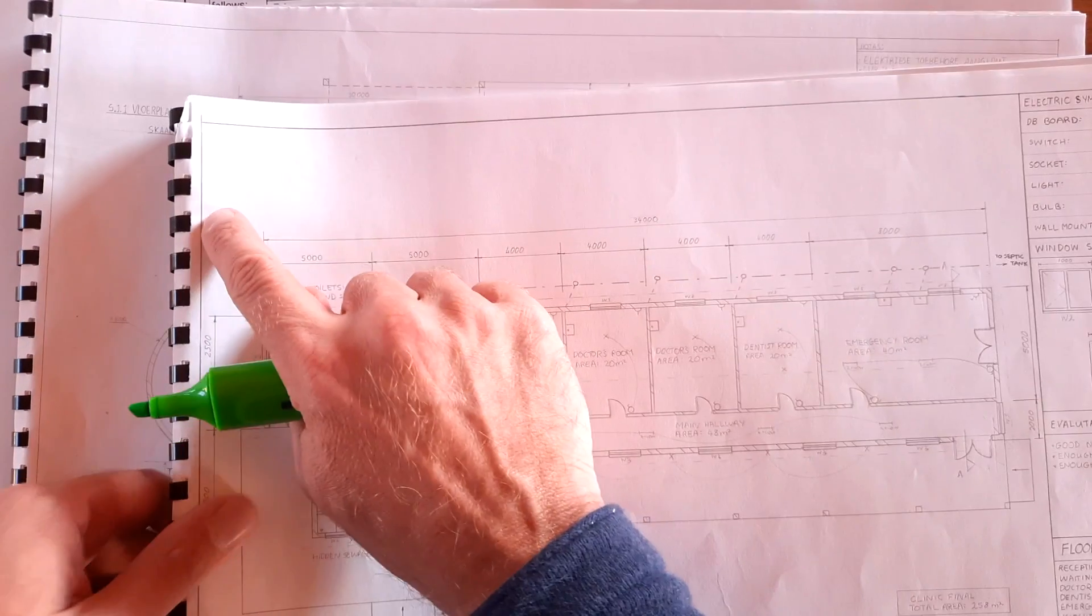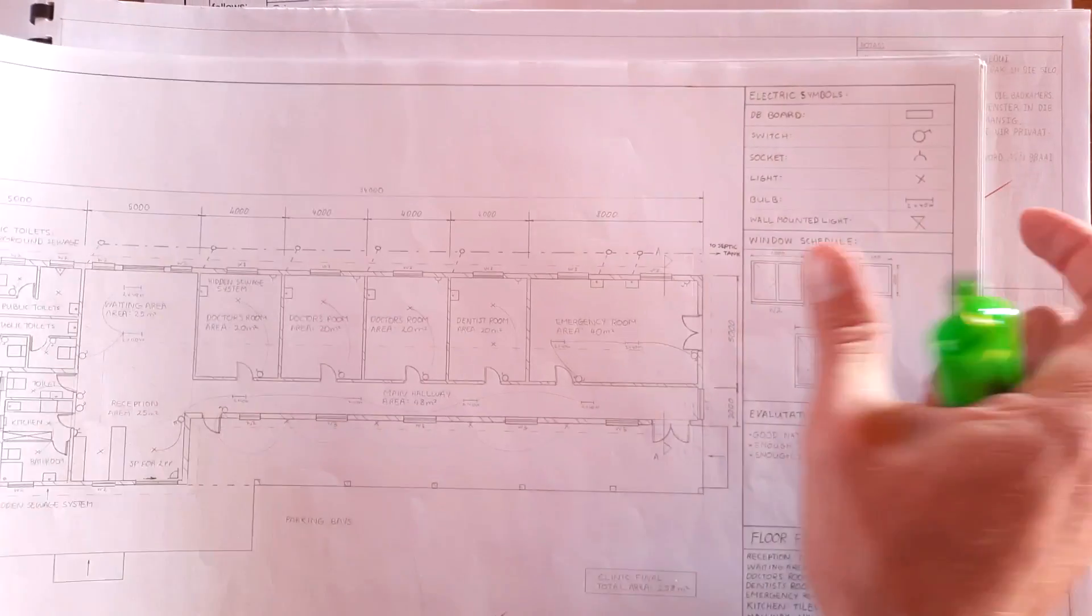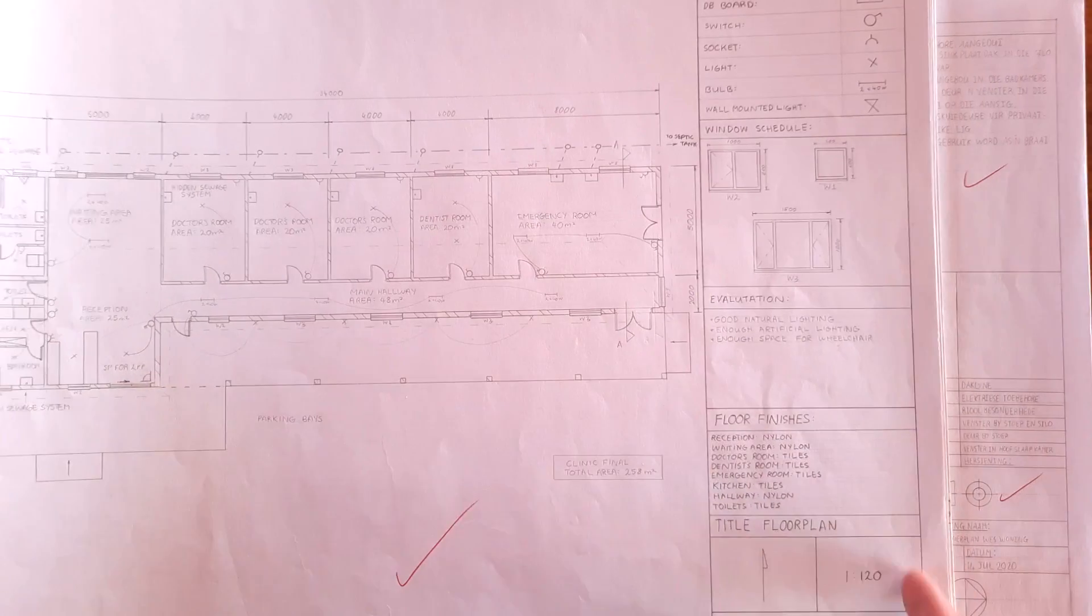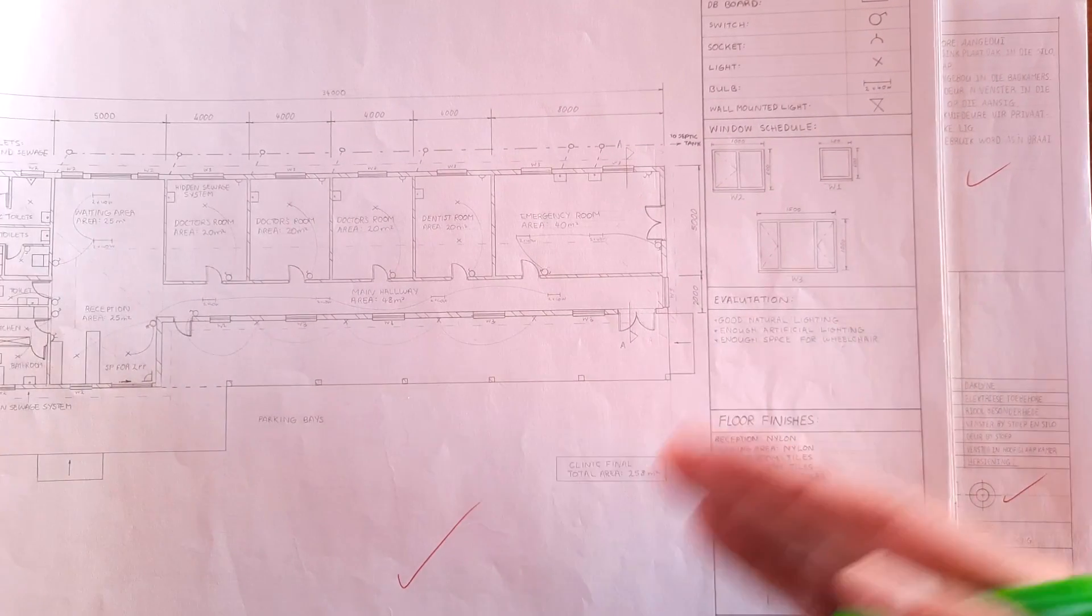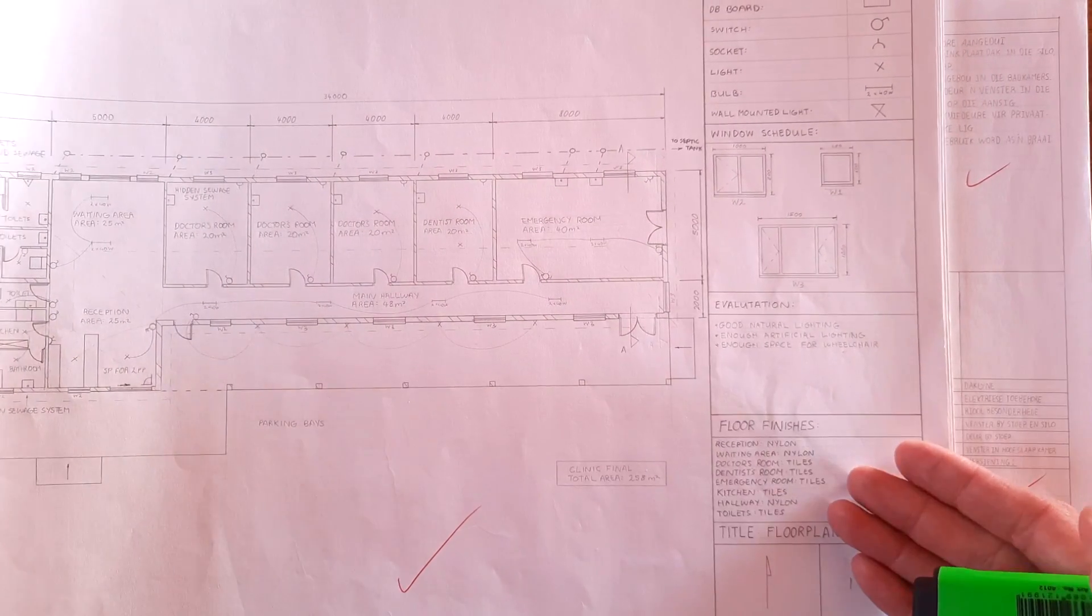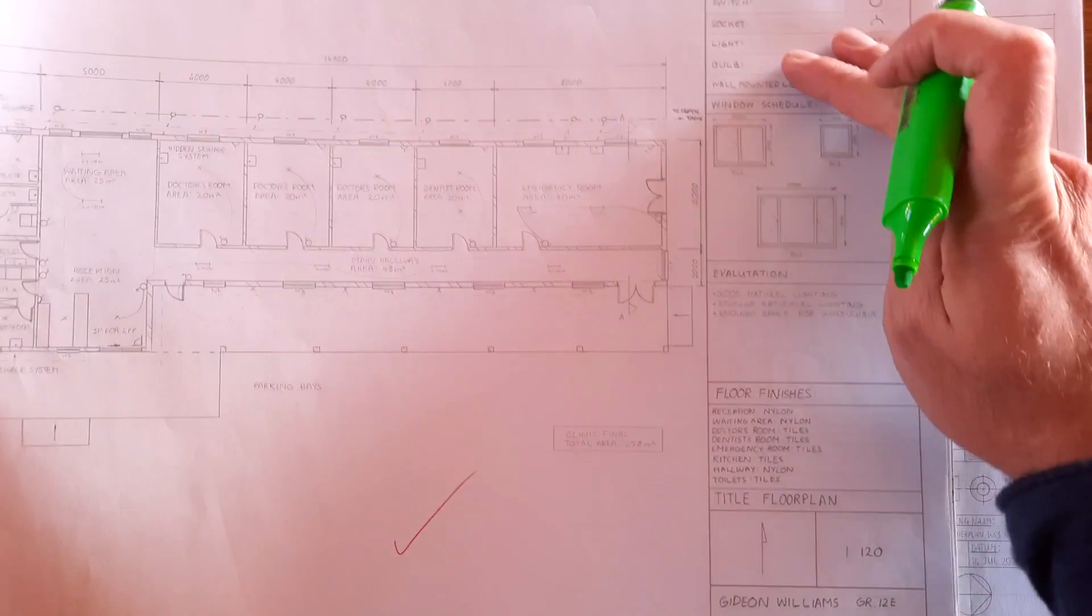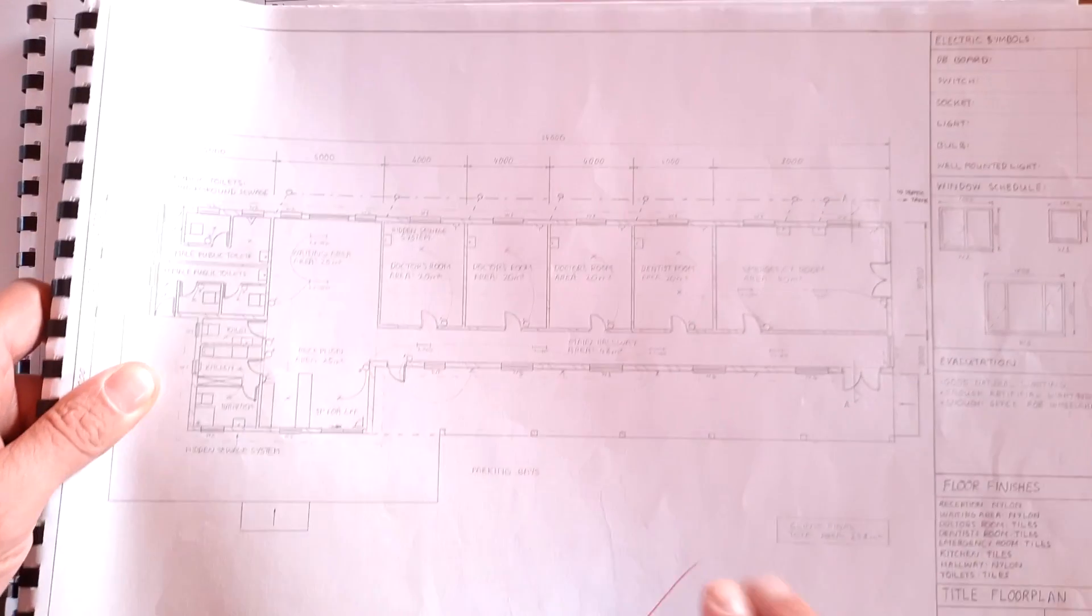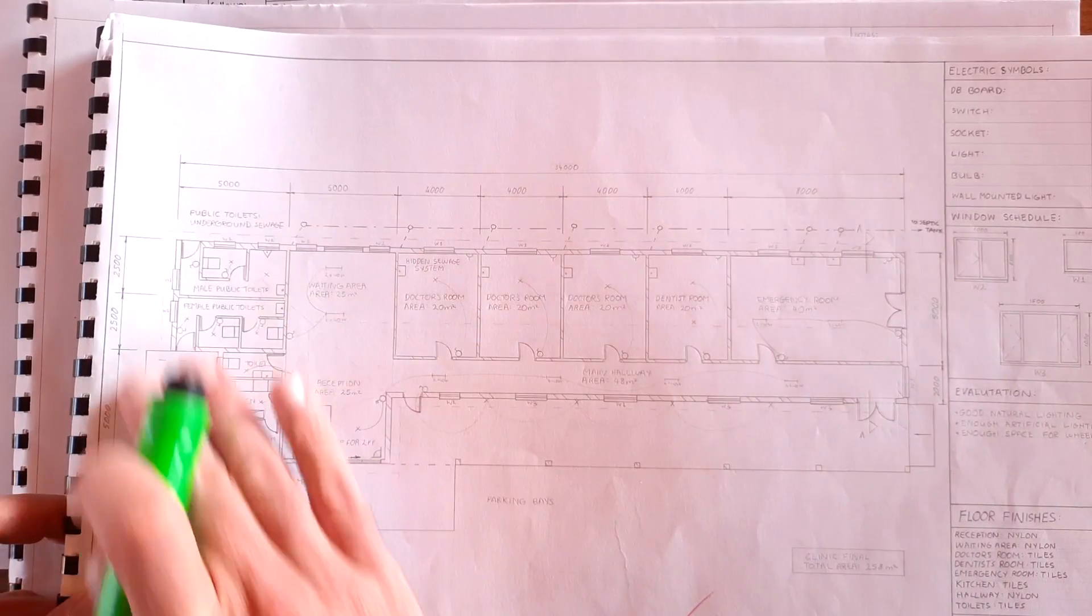So first things first, you must have a clear border going all around. There's going to be your title block as I explained in my previous videos. Make sure you look at that. You're going to have all of that in here. Then you're going to go and you're going to draw up your floor plan.